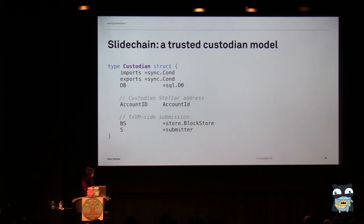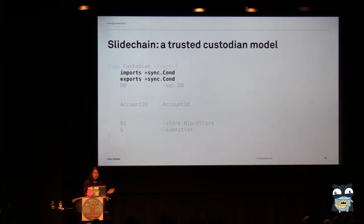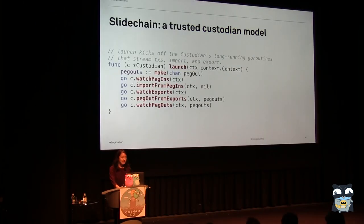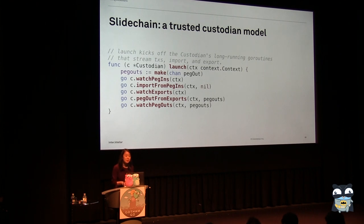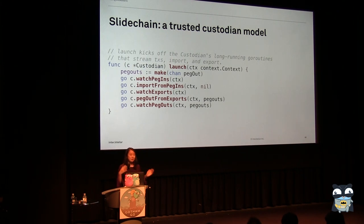In Slidechain, our custodian has a number of fields — importantly it manages some data which we store in a SQL database, it has a Stellar account, it has fields for managing all of the transactions in TXVM, and we synchronize everything really easily using nice Go features. When we launch a custodian, we basically kick off a number of Go routines that do things like watch for peg-in transactions, perform the imports, watch for those exports, and perform the exports.